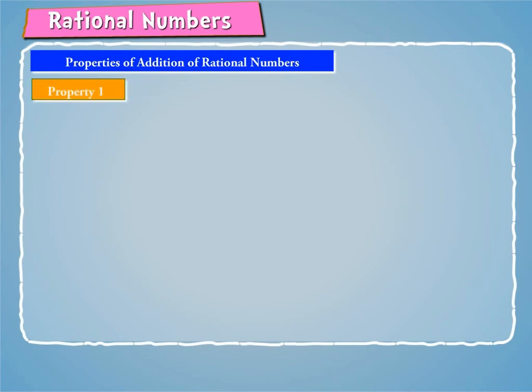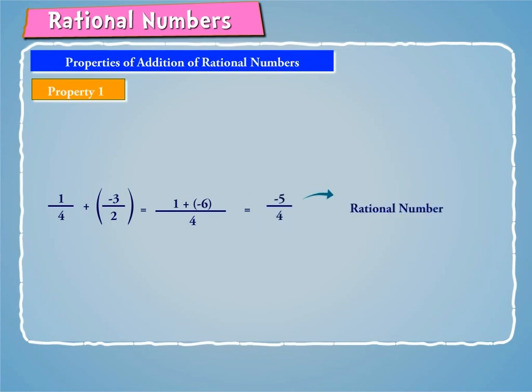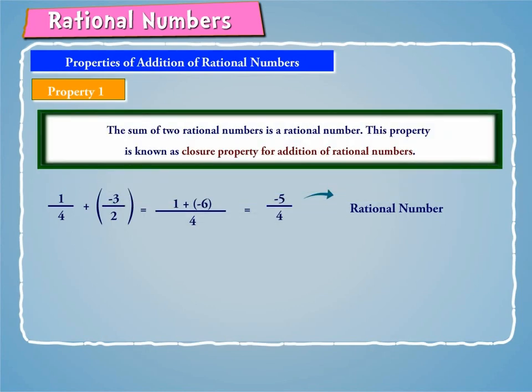Property 1: Let us consider the following example. 1/4 plus (-3/2) is equal to (1 + (-6))/4, which is equal to -5/4, which is a rational number. Hence, we can say that the sum of two rational numbers is a rational number. This property is known as the closure property for addition of rational numbers.